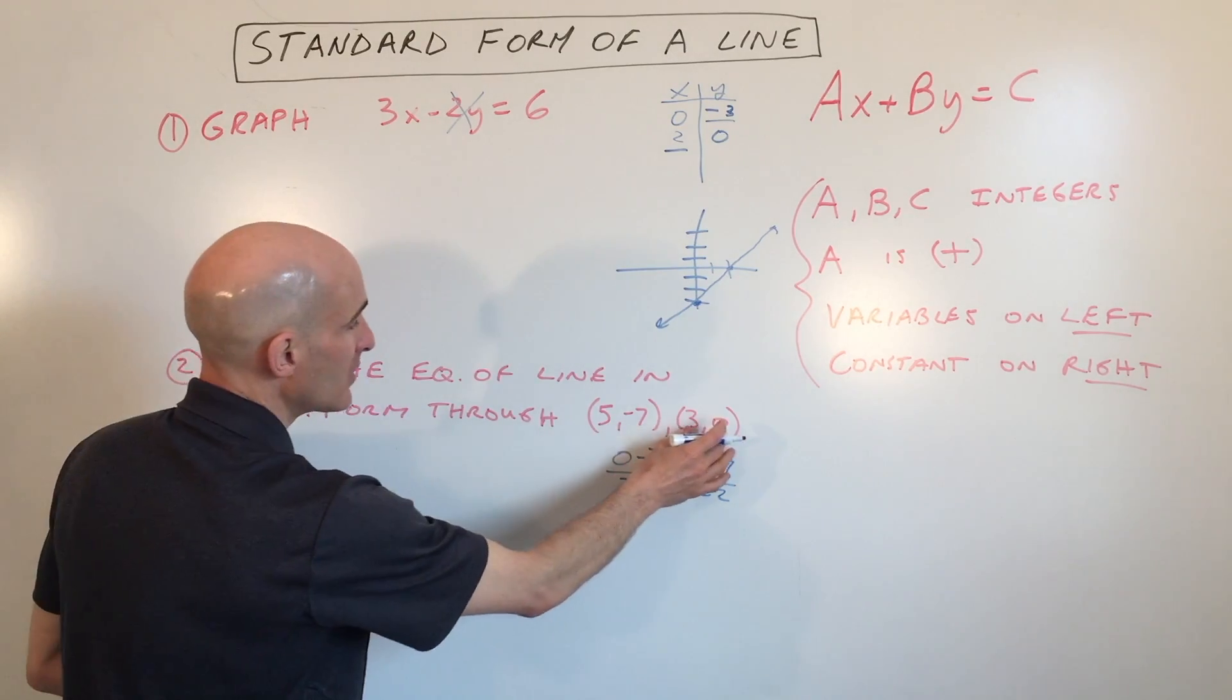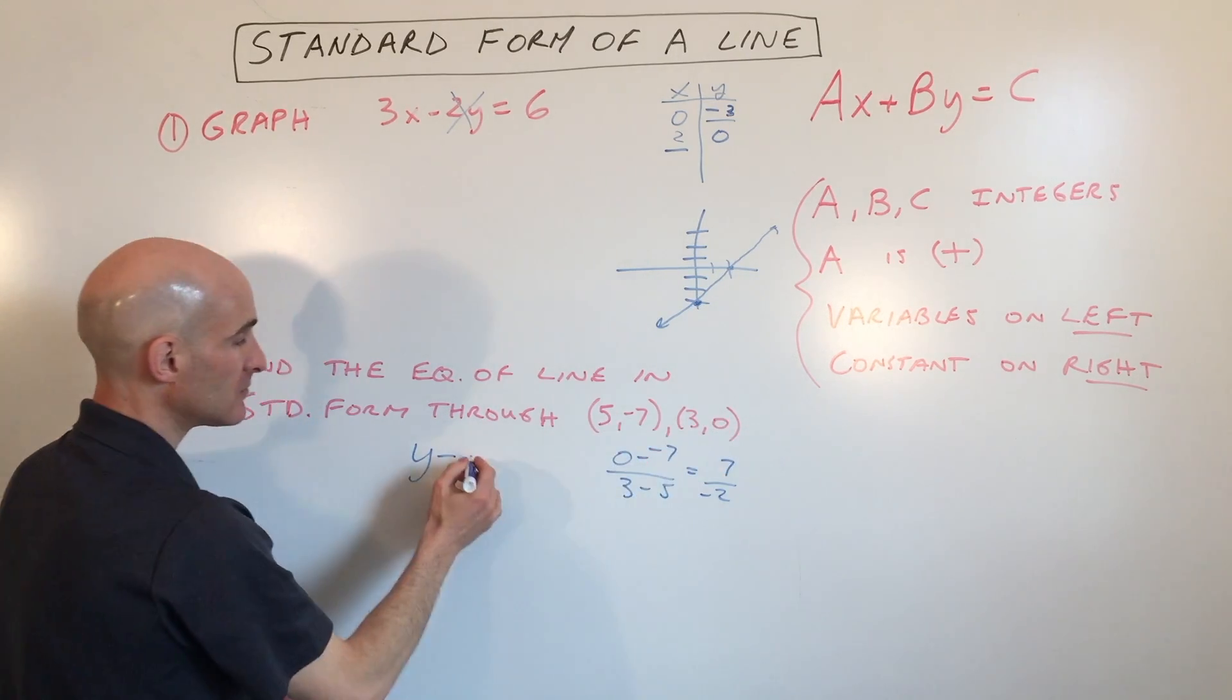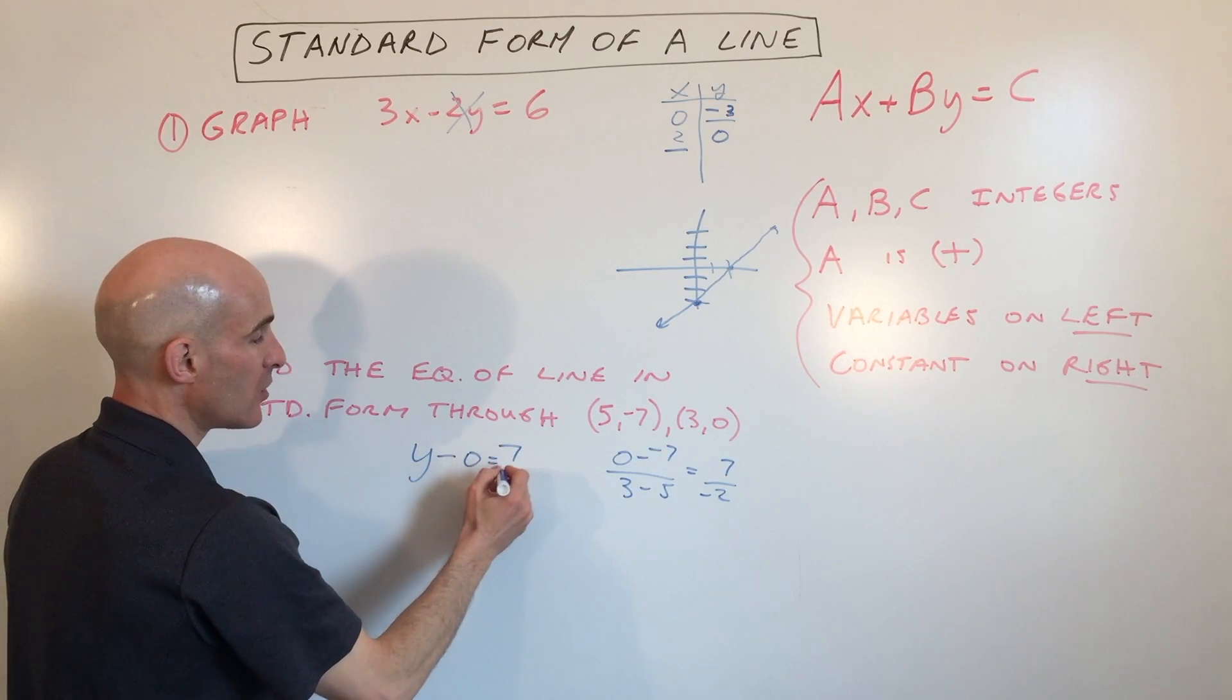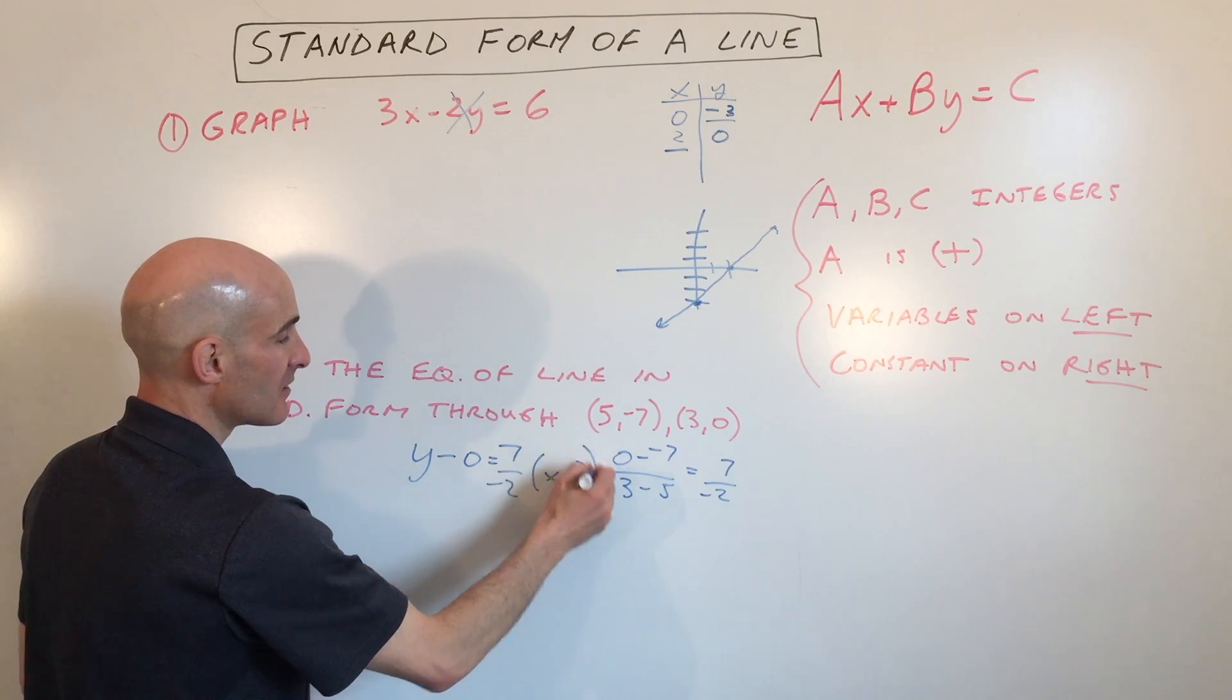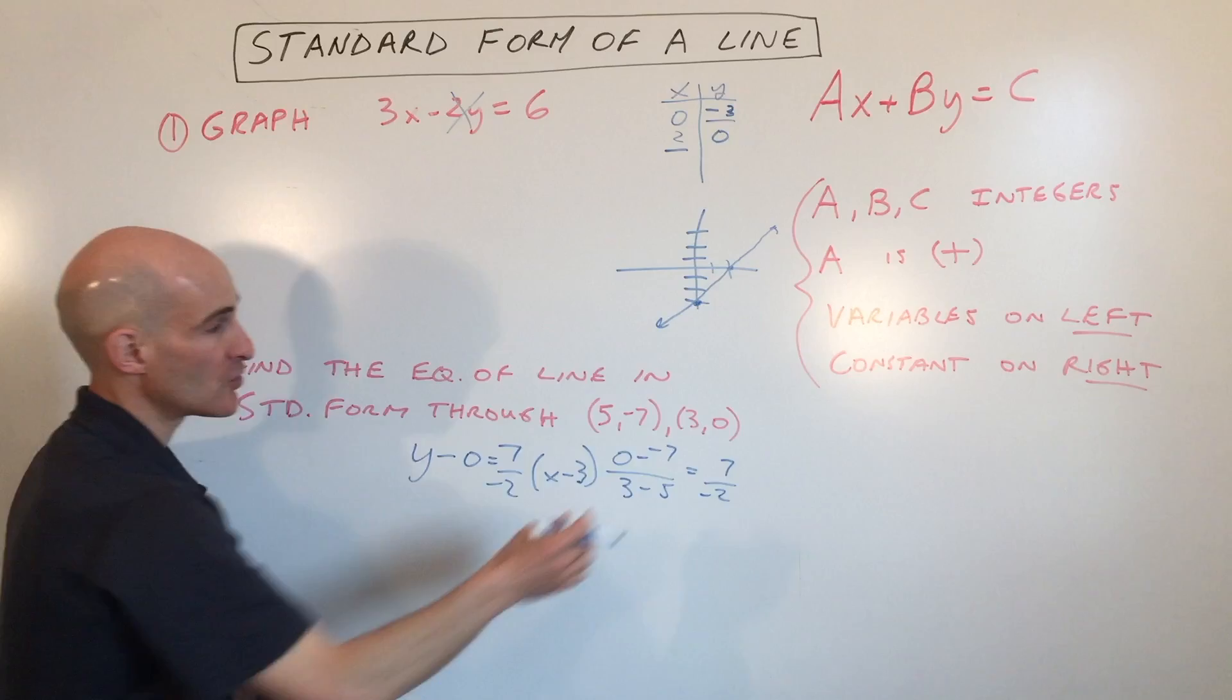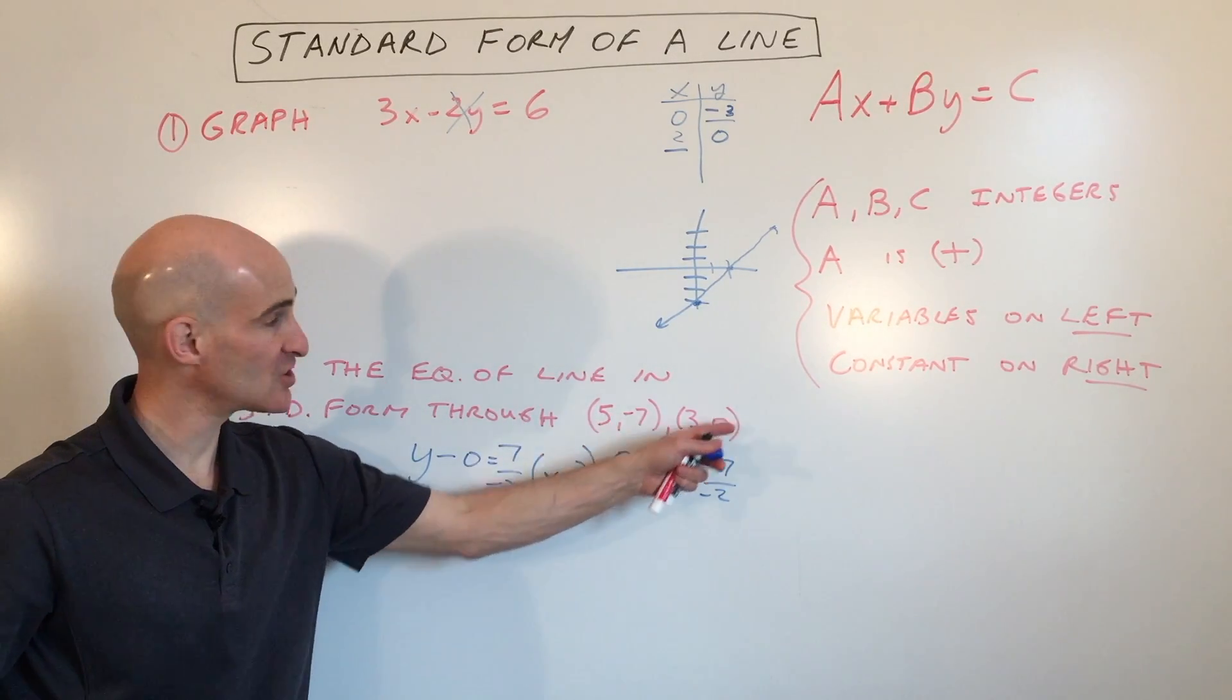Now if we pick one of these points—let's just say we pick the point (3, 0)—we have y minus the y-coordinate equals the slope times x minus the x-coordinate. So you could have either picked this point or this point, it doesn't matter. You just don't want to mix and match; just pick one.